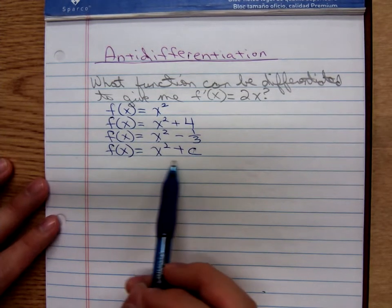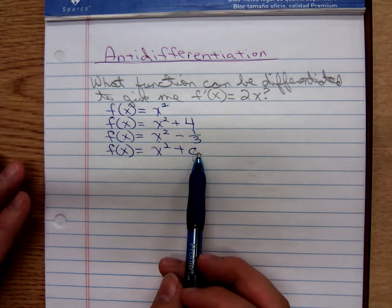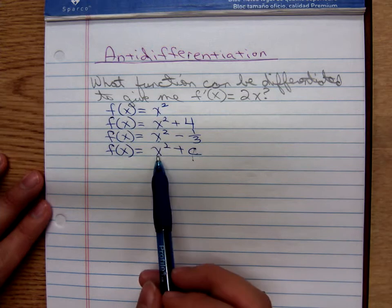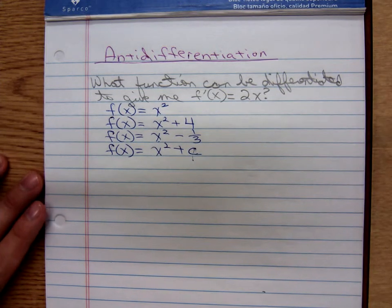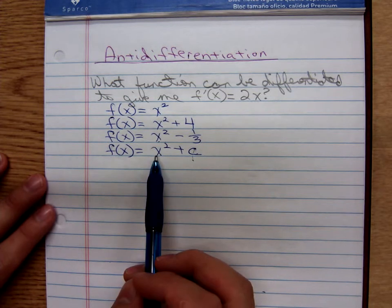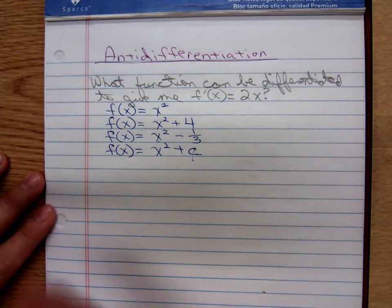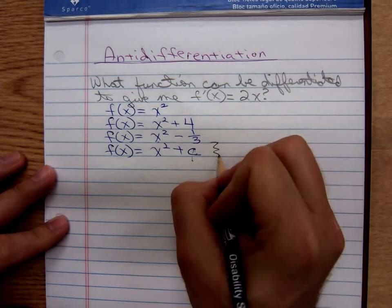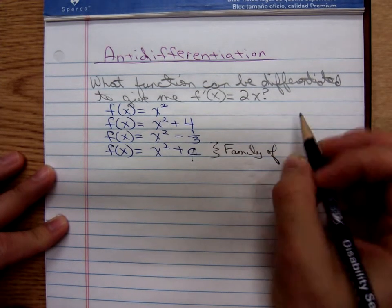So I'd say x² + c. This x² + c, where c is any constant number, can be differentiated to give us back 2x. And x² + c is called the family of antiderivatives. There are infinitely many antiderivatives because you could use any real number there as the constant term. So this x² + c is called the family of antiderivatives.